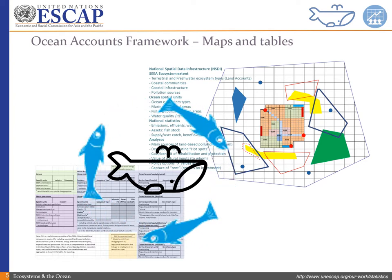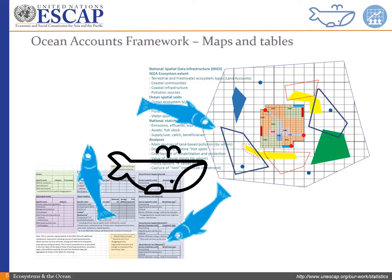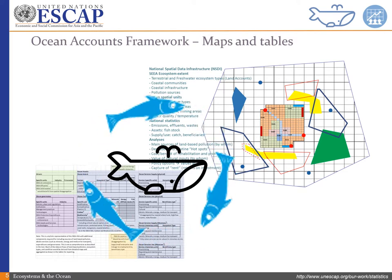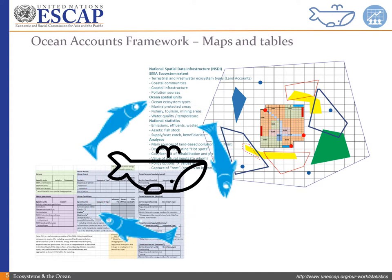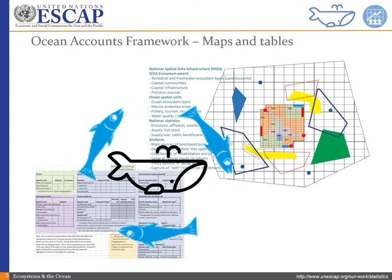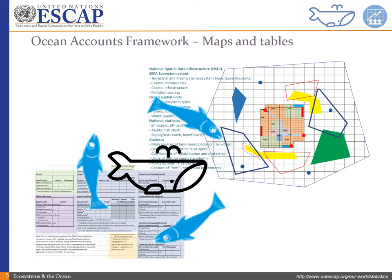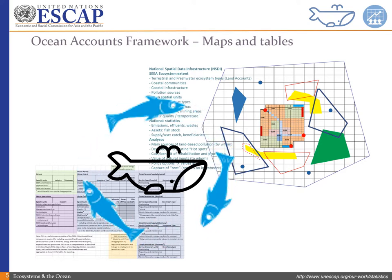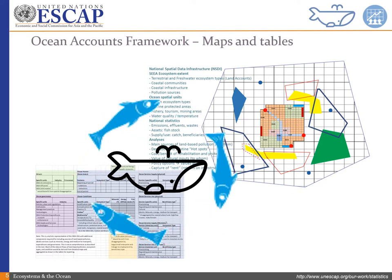Indonesia is considering developing a systematic approach to designate marine protected areas, given the uniqueness, sensitivity, and services provided. China is investigating adapting their terrestrial approach to ecosystem valuation to the ocean in terms of physical and monetary valuation. Malaysia and Vietnam have committed to pilots, but have not yet determined the focus.